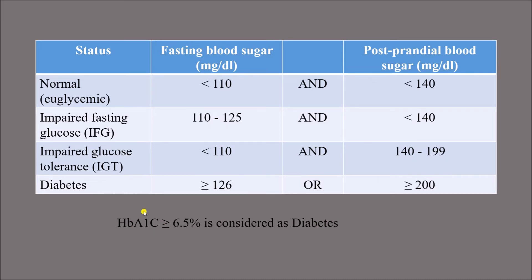HbA1c level tells us about the blood sugar condition over the last three to four months, which is equivalent to the lifespan of RBCs. In contrast, a regular blood sugar test only reflects the status of blood sugar for that particular day. That is why HbA1c is very important — arguably as important as, if not more important than, individual blood sugar levels. Always check HbA1c along with blood sugar levels.